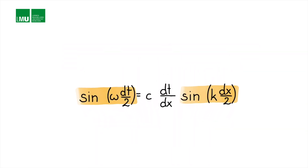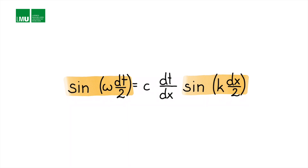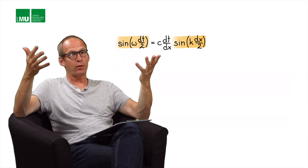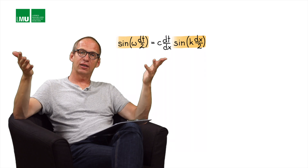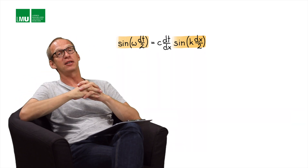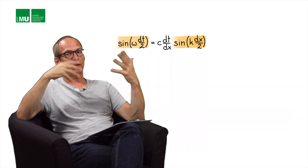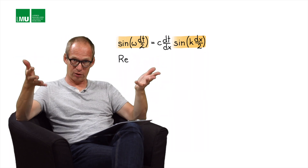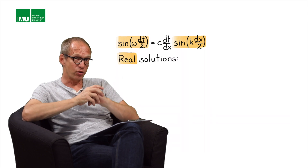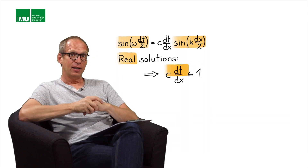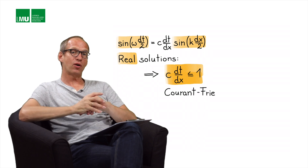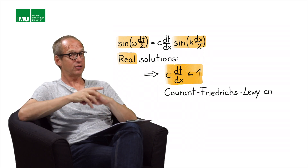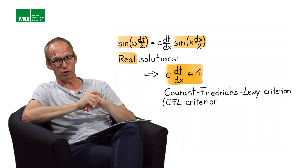This simple equation leads to one of the most fundamental results of numerical analysis. We see two sine functions related by c times dt over dx. In order for this equation to have real solutions, c times dt over dx must be less than or equal to 1. That condition is the famous Courant-Friedrich-Levy criterion, often referred to as the CFL criterion.